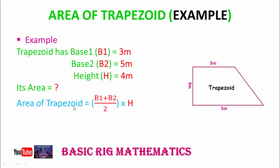Here we simply replace B1 with 3 meters, B2 with 5 meters, and H with 4 meters. So area of trapezoid equals 16 square meters. The total area of the trapezoid is 16 square meters. I hope you understand how to calculate the area of trapezoid with this example.